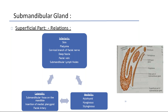Inferiorly: skin, platysma, cervical branch of facial nerve, deep fascia, facial vein, and submandibular lymph nodes. Laterally: the submandibular fossa on the mandible, insertion of medial pterygoid, and facial artery. Medially: mylohyoid, hyoglossus, and styloglossus.